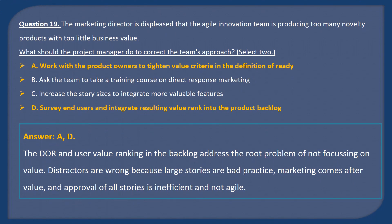Answer A and D. The definition of ready and user value ranking in the backlog address the root problem of not focusing on value. Distractors are wrong because large stories are bad practice, marketing comes after value, and approval of all stories is inefficient and not Agile.